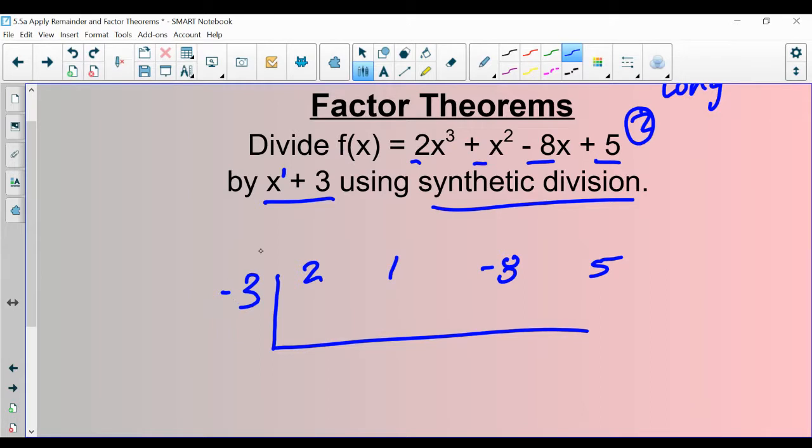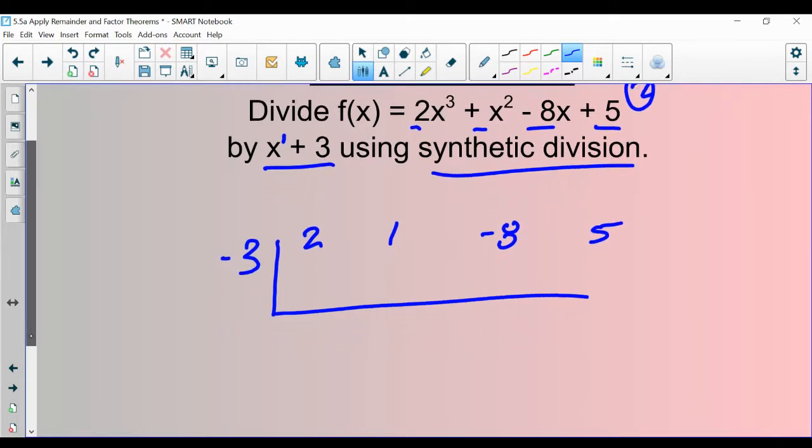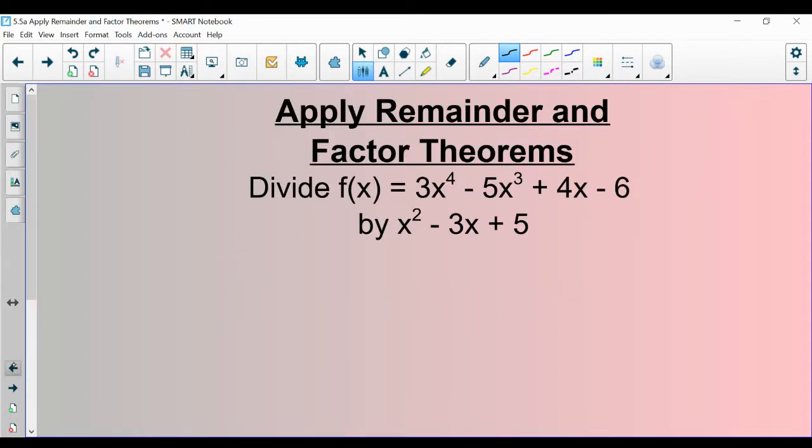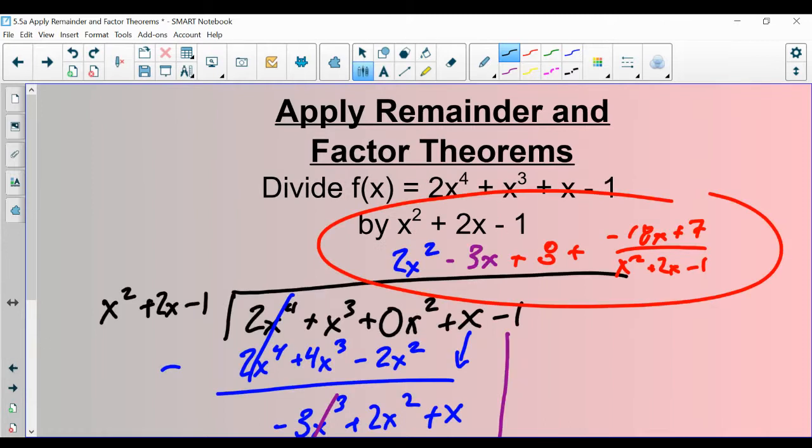So remember, the number out here is what makes your divisor zero. So your first step here is going to be to drop the first number and write it right there. Much like with polynomial division, your answer was what was written at the top.